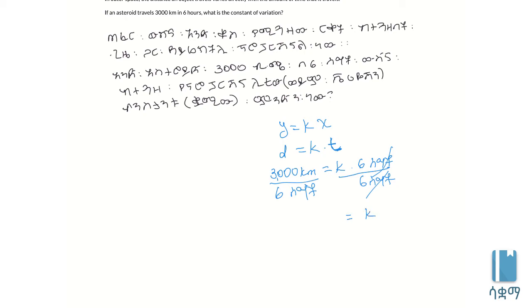The answer is 500 kilometers per hour. This is the constant of variation.